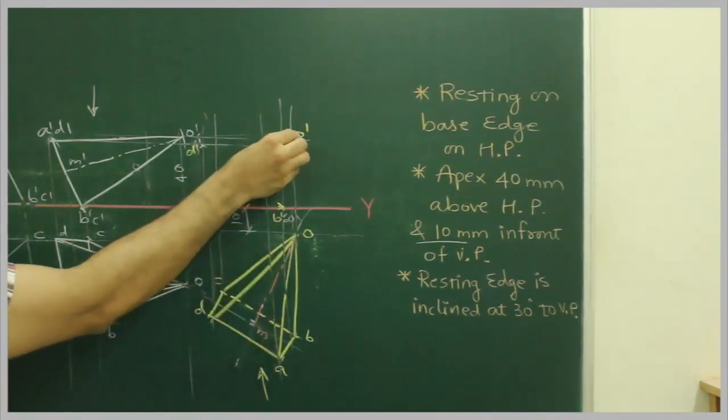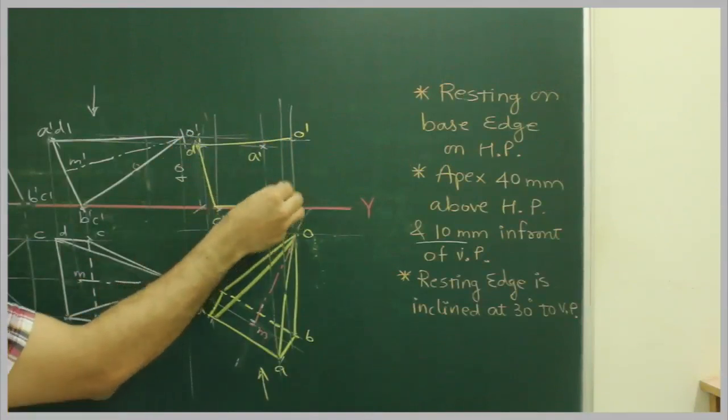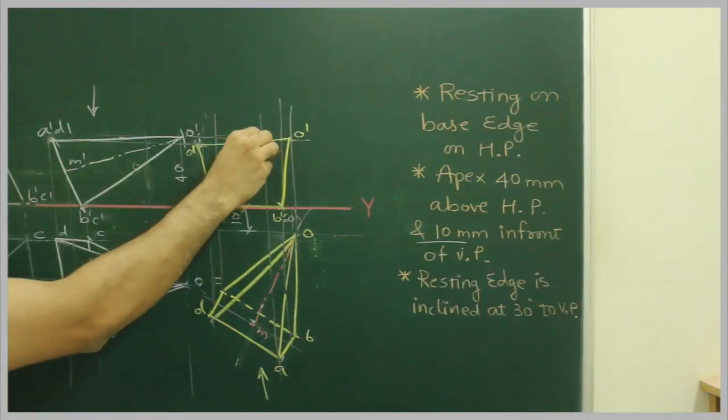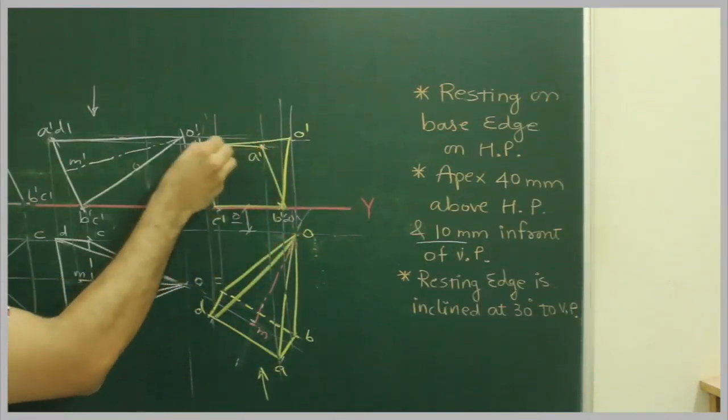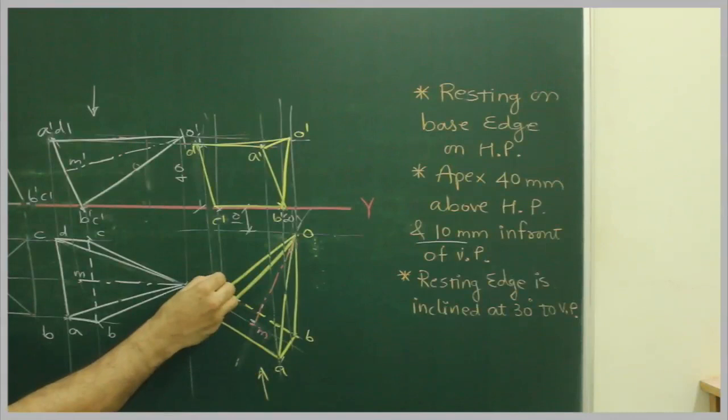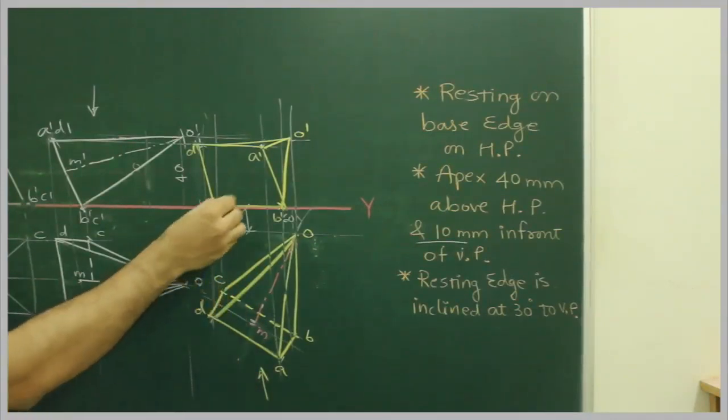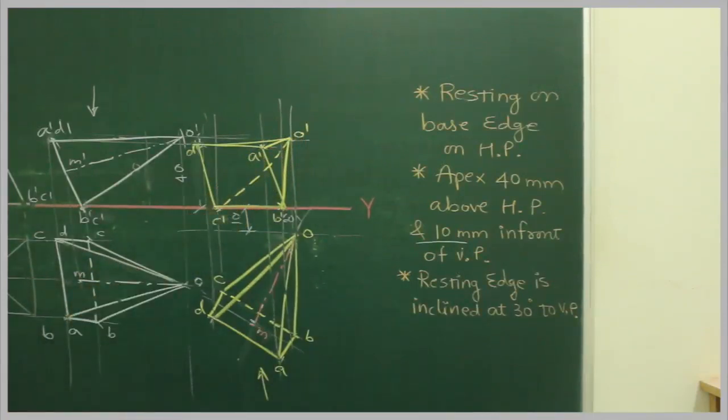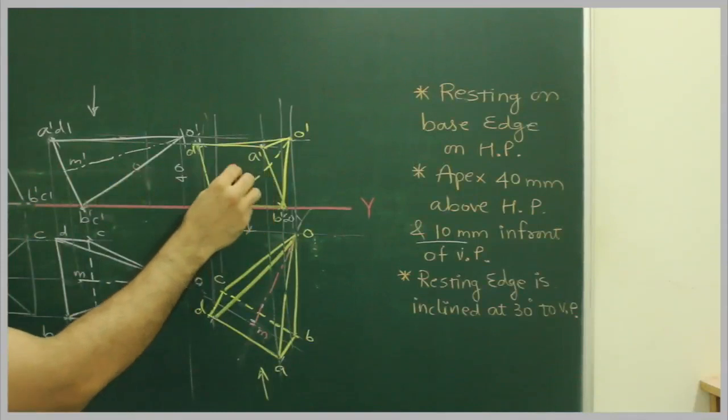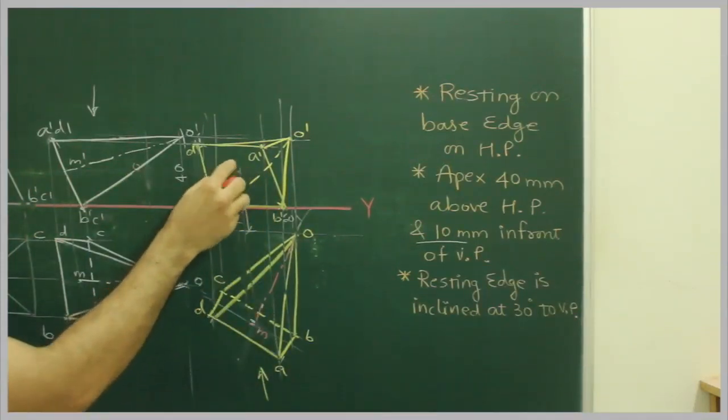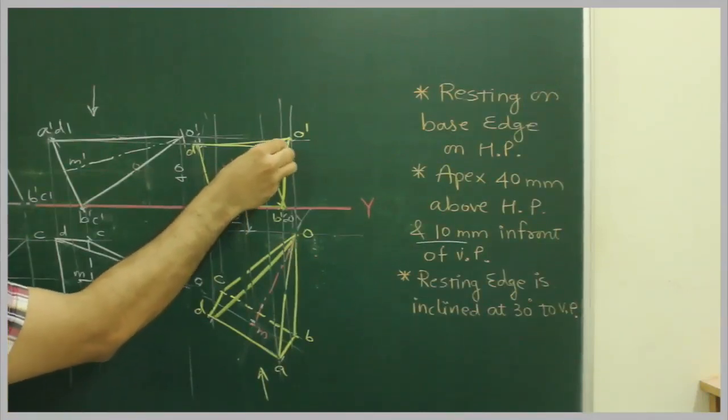A is here. First we will draw the boundary lines. A is here with the observer, so A will be a dark corner. So A dash to B dash, A dash to D dash, and O dash to A dash will be a dark corner, because the observer can see all the lines passing through A. And point C which is away from the observer will be dotted. So O dash to C dash will be a dotted line. And we can X. This is M, M dash, we can draw X's.